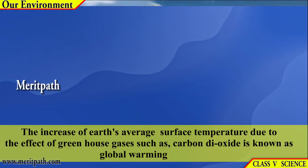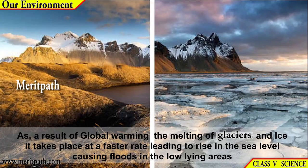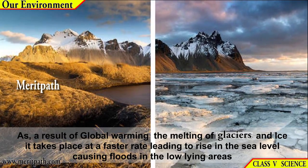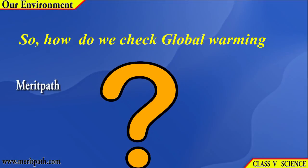The increase of Earth's average surface temperature due to the effect of greenhouse gases such as carbon dioxide is known as global warming. As a result of global warming, the melting of glaciers and ice may take place at a faster rate, leading to a rise in sea level and causing floods in low-lying areas.